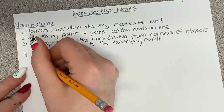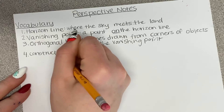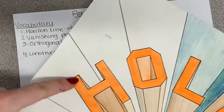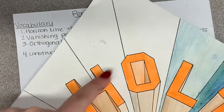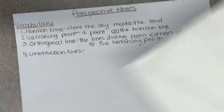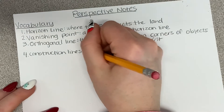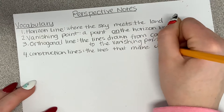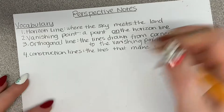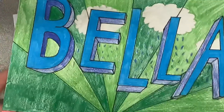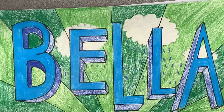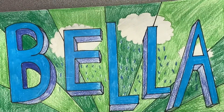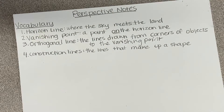Number four is construction lines. Construction lines are the lines that make up a shape — like the basic outlines of letters without anything extra. A square or a circle — those outlines are construction lines. So basically every line other than orthogonal lines. The front construction lines make the front of the shape, and back construction lines cut off the shape from going all the way to the vanishing point.